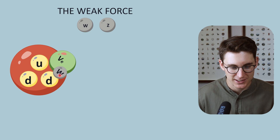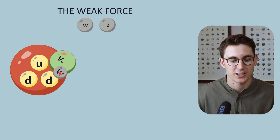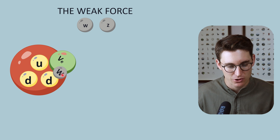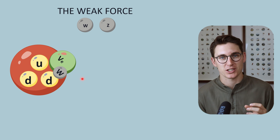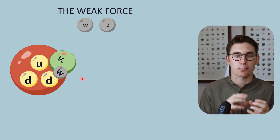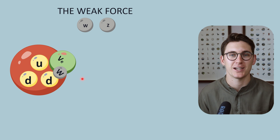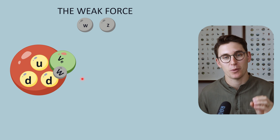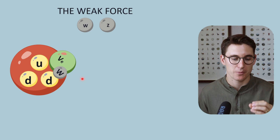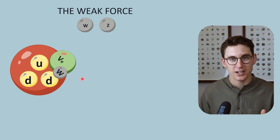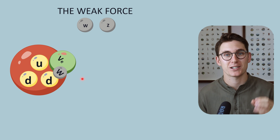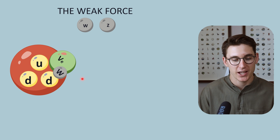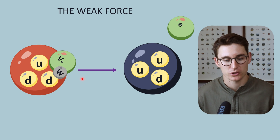We can see an electron neutrino here attached to a W boson, and they interact with the down quark of our neutron. When we looked at the strong force, I showed you how the gluon changed a property of the quark known as color. Here the W boson is also going to change a property of the quark, but not color, charge, mass, or spin — it's going to change the quark type. This is how we're able to change a neutron into a proton.